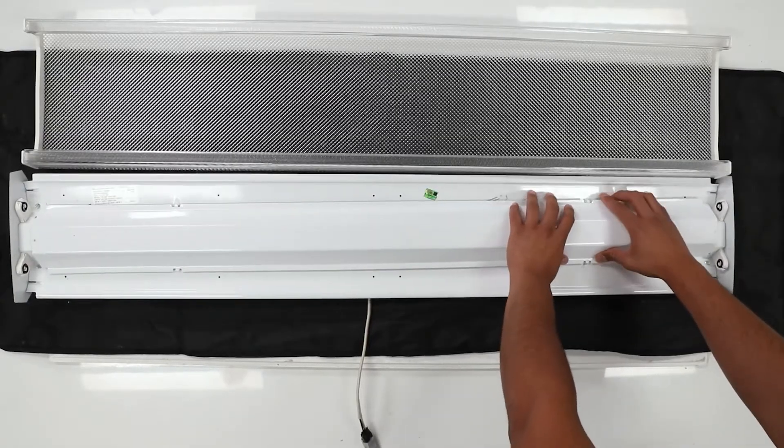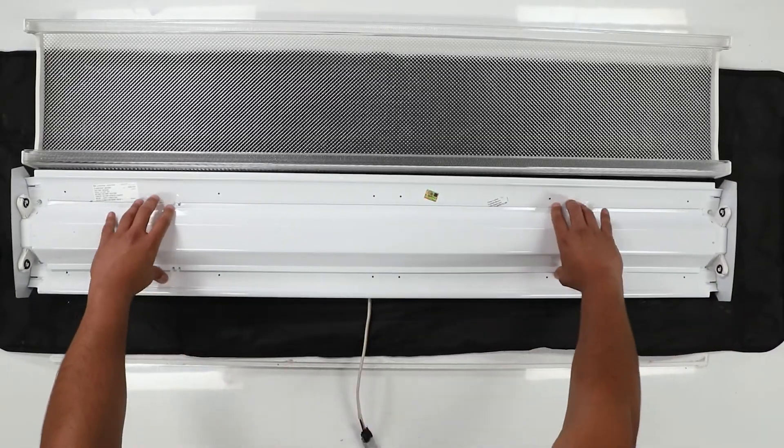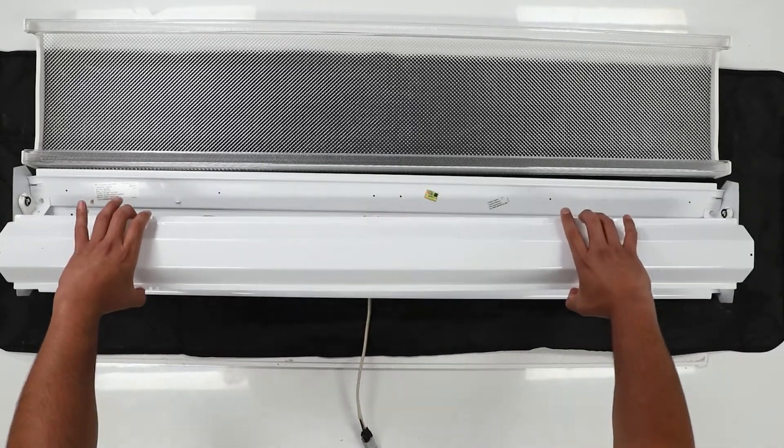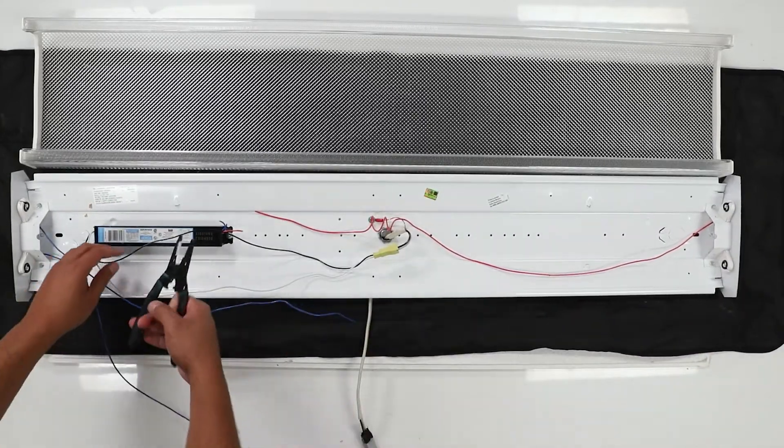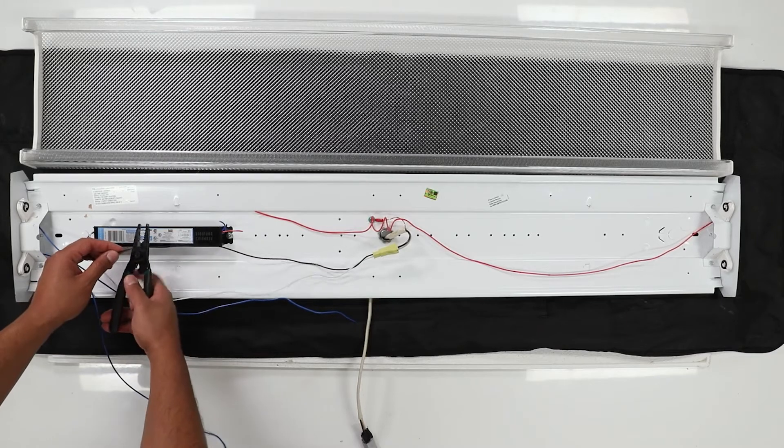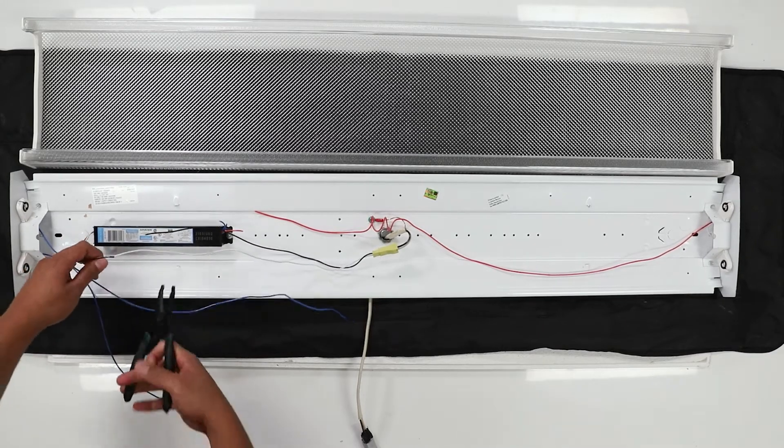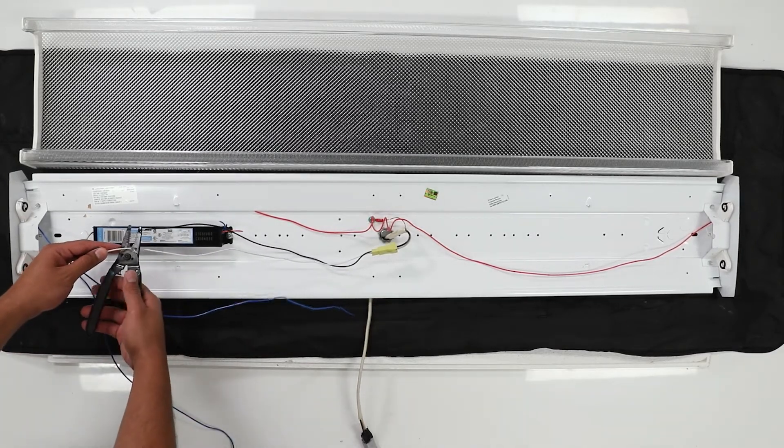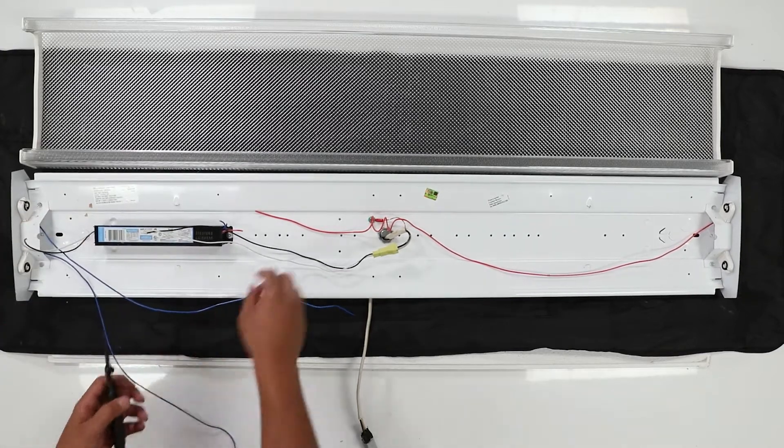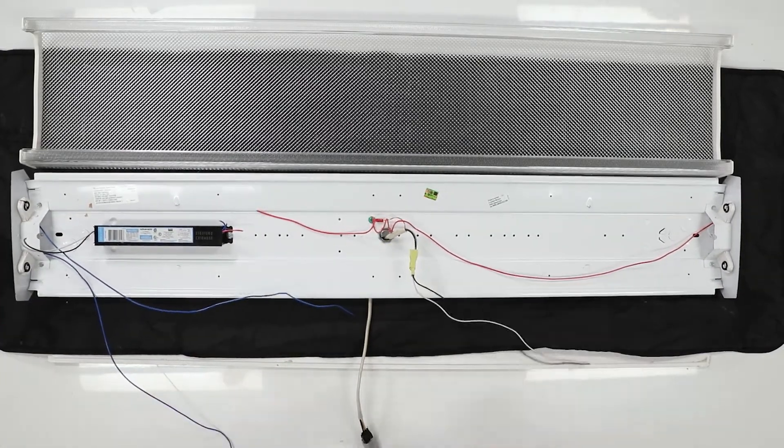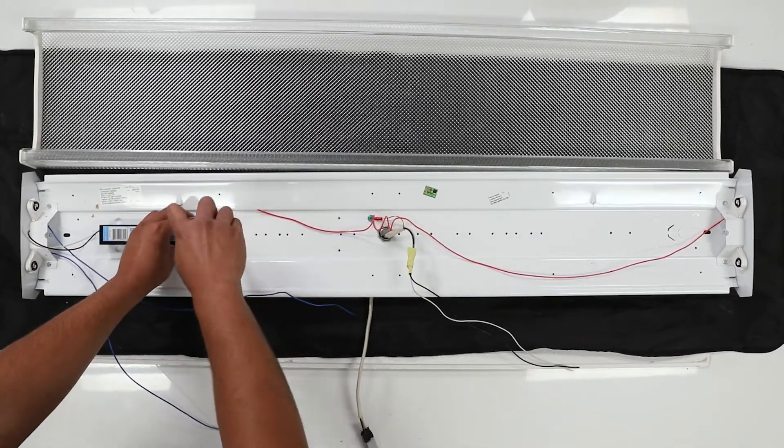Remove the ballast cover to expose the wiring. First, disconnect the hot, neutral, and ground wires that are connected to the ballast. Then, cut all the wires leading from the ballast to the lamp sockets. Be sure to cut them close to the ballast so that you have extra wire to work with later on.